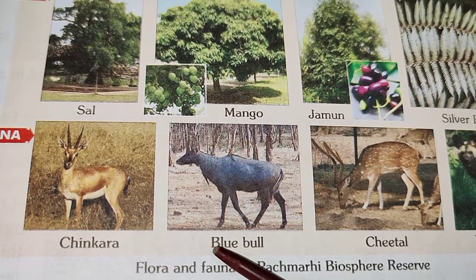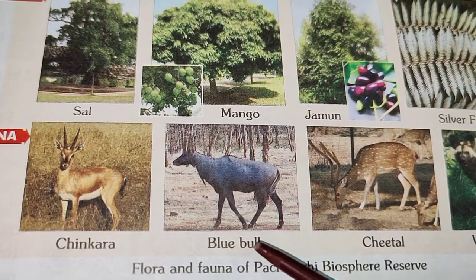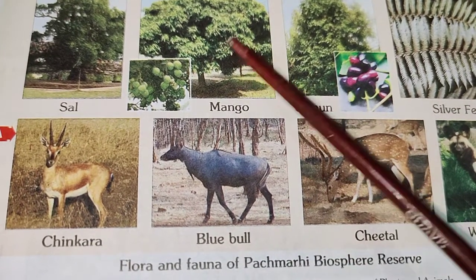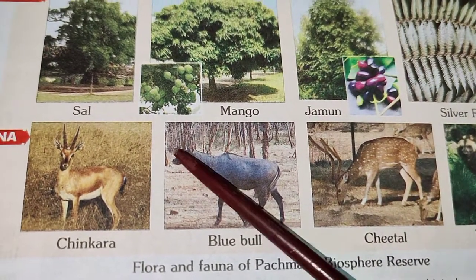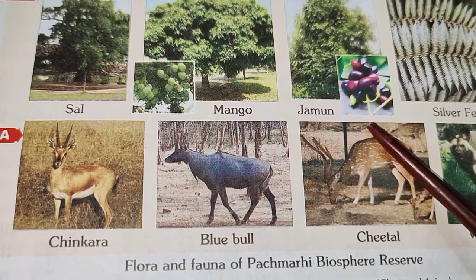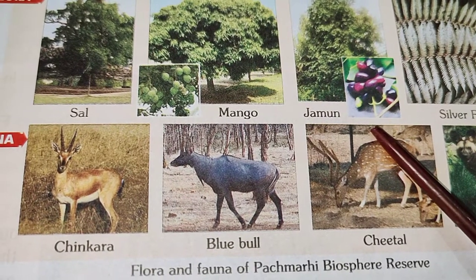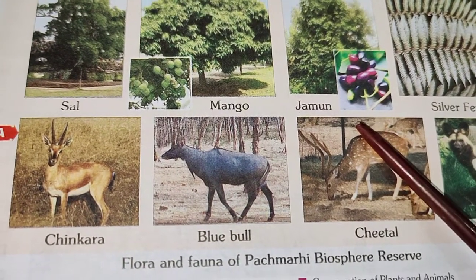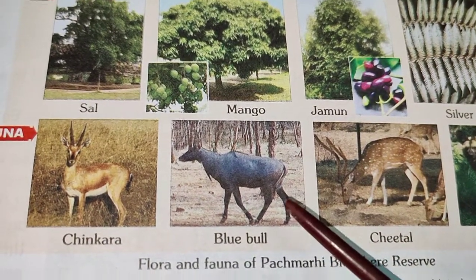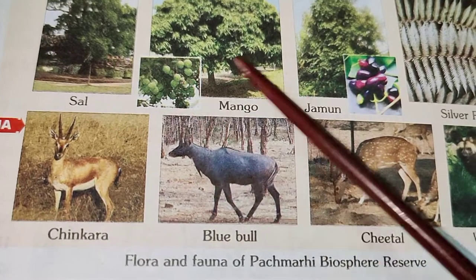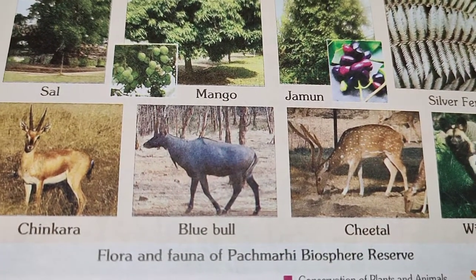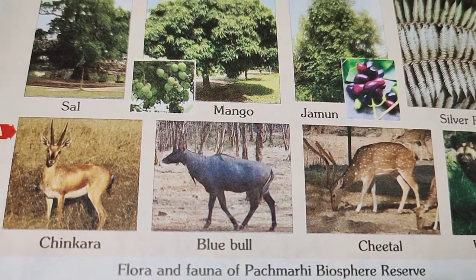The Panchmari Biosphere Reserve is very unique. The plants and animals found here are similar to those found in the upper Himalayan mountains and in the lower Western Ghats. Here you can see the different flora and fauna of Panchmari Biosphere Reserve.